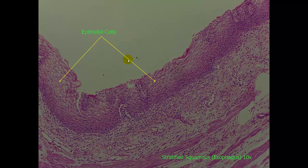Here is the same tissue at a 10x objective, and we can see that this is the tissue that we are looking for. It is multiple layers, and it is epithelial-style cells. Now, when you are trying to identify cells, keep in mind that you want to look at the cells that are on the apical surface, not on the basal surface. These cells on the basal surface will often have shapes that aren't typical of that tissue.